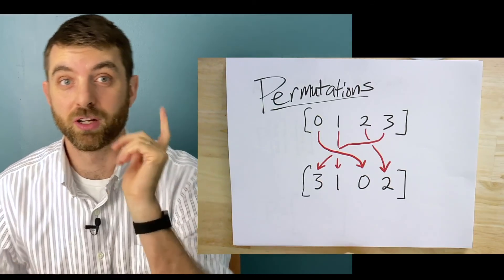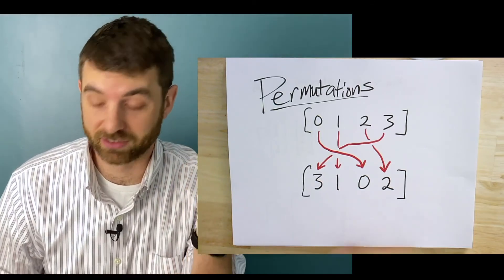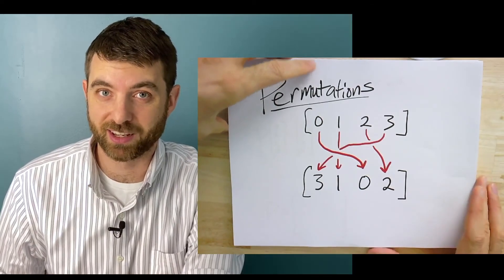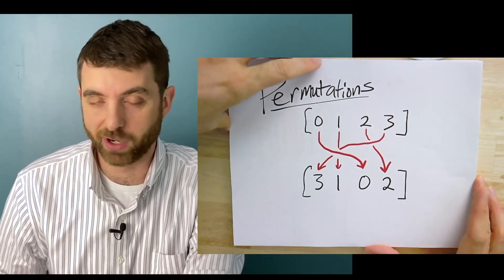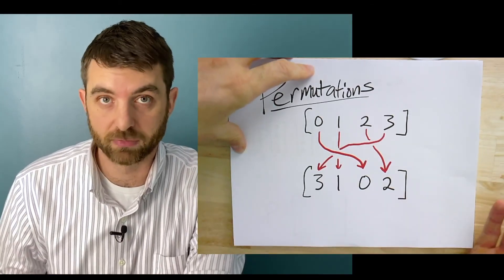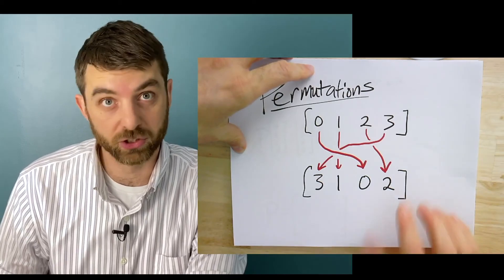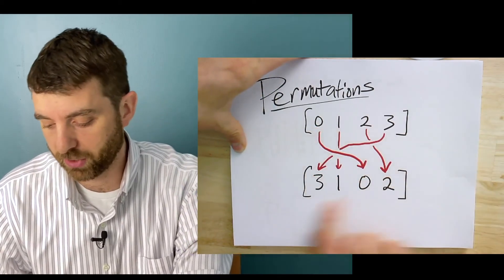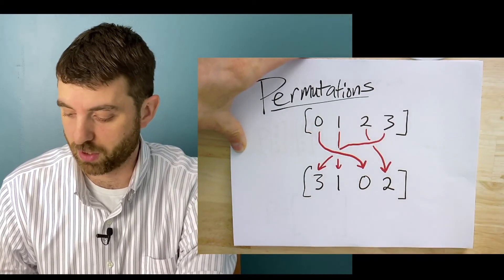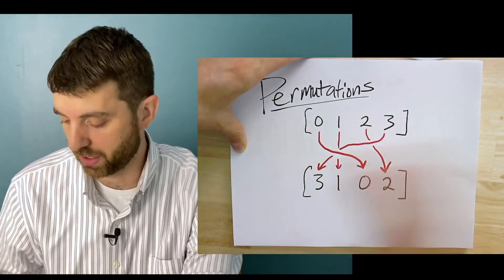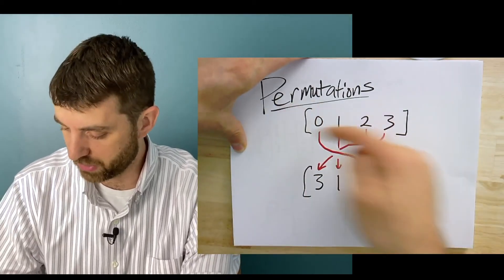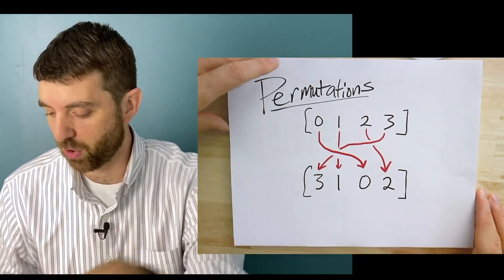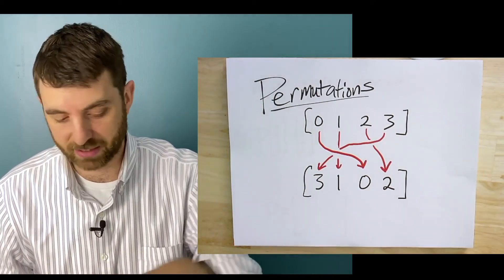Today we're going to do permutations. If you want to think of a permutation as just some way of rearranging a list, that's totally fine — it's a good starting point. So here I've got 0, 1, 2, 3 and I've rearranged it to 3, 1, 0, 2. Everything in the first list gets a new position, a new home in the second list.